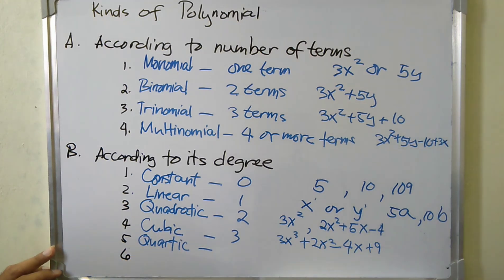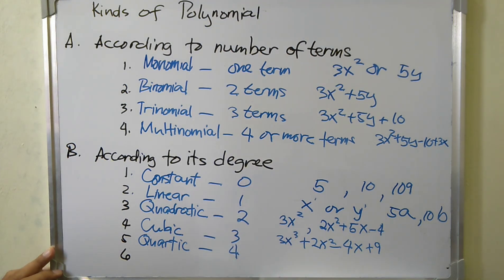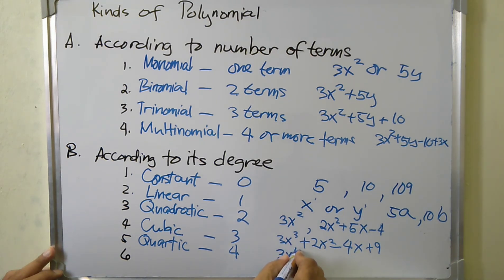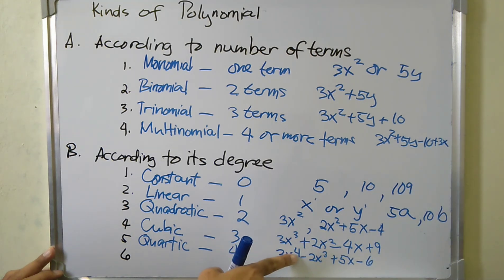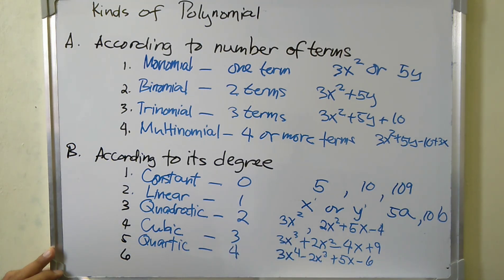Quartic polynomial is a polynomial of degree four. For example, we have 3x to the fourth minus 2x cubed plus 5x minus 6. The highest exponent here is four, so we call this a quartic polynomial.